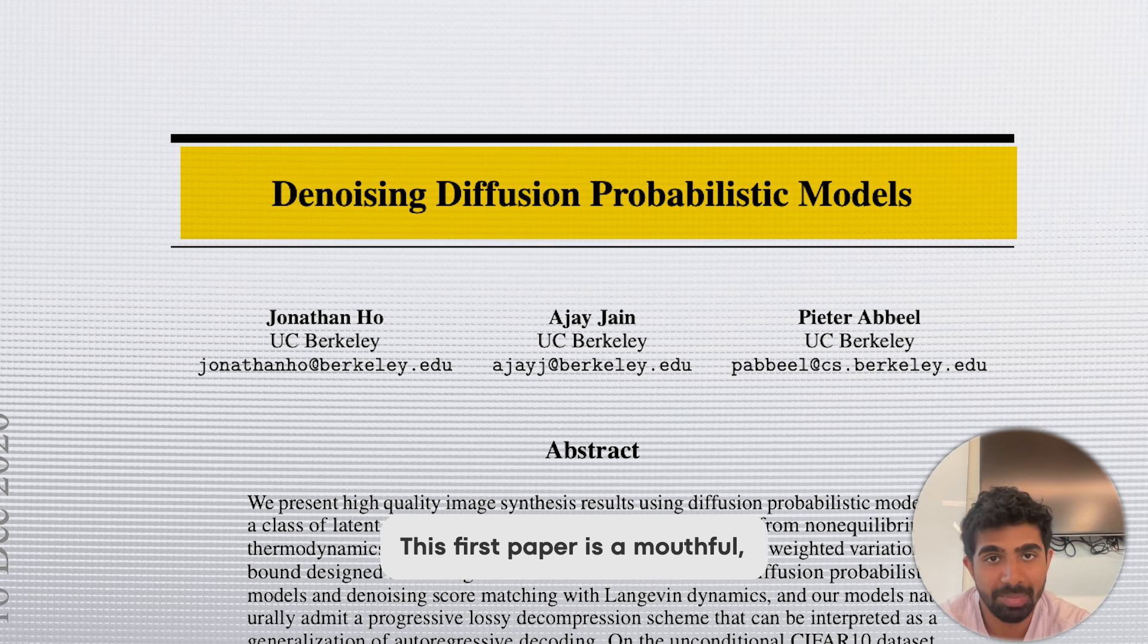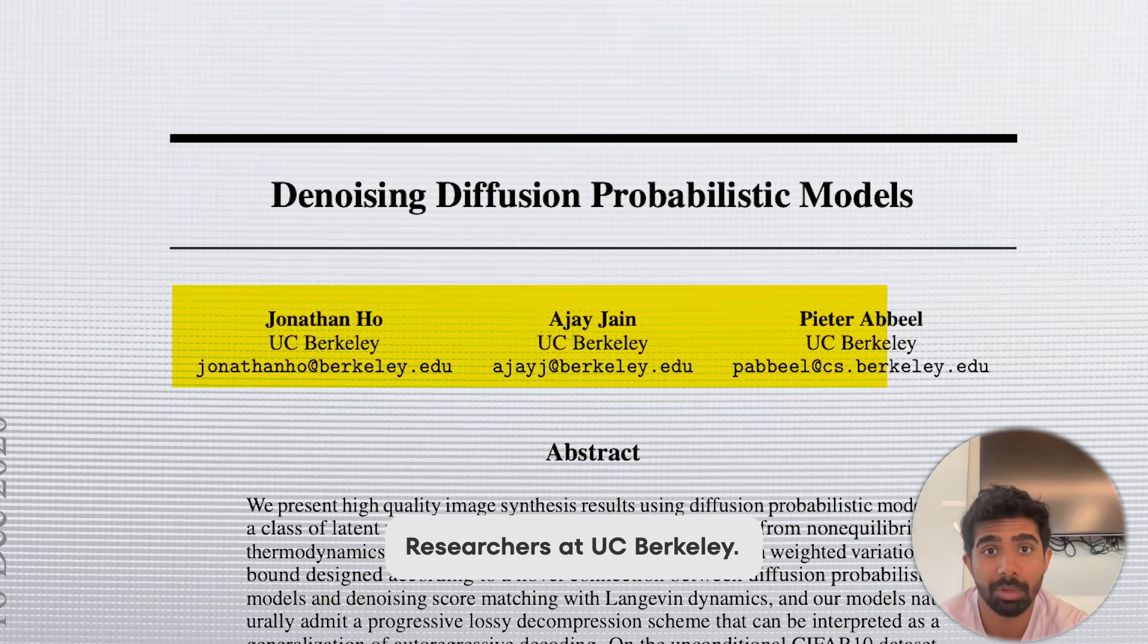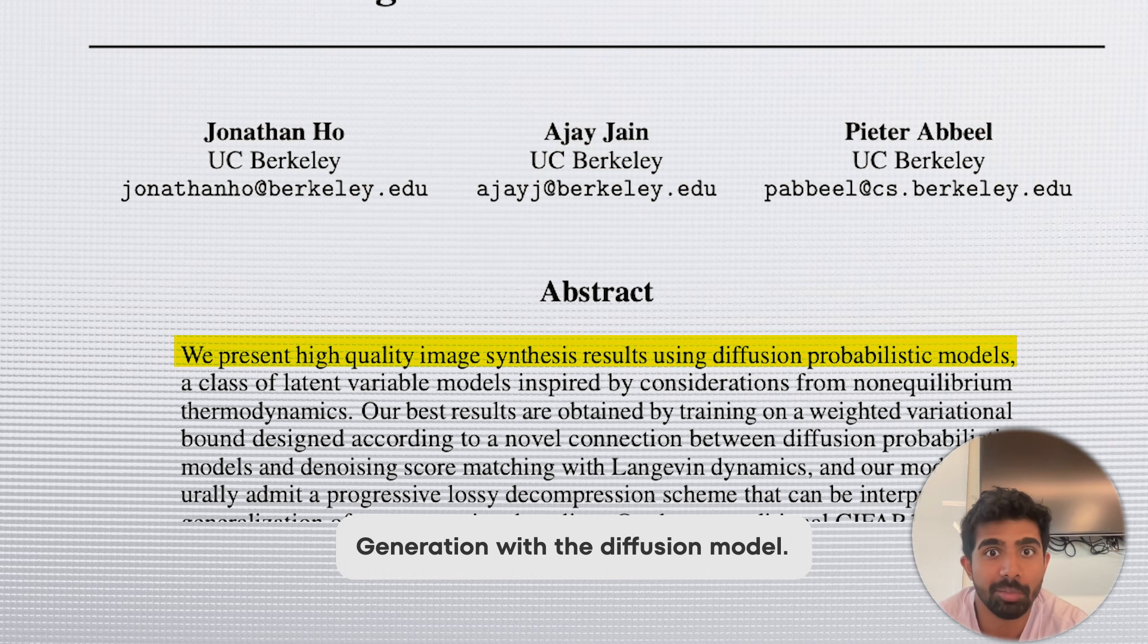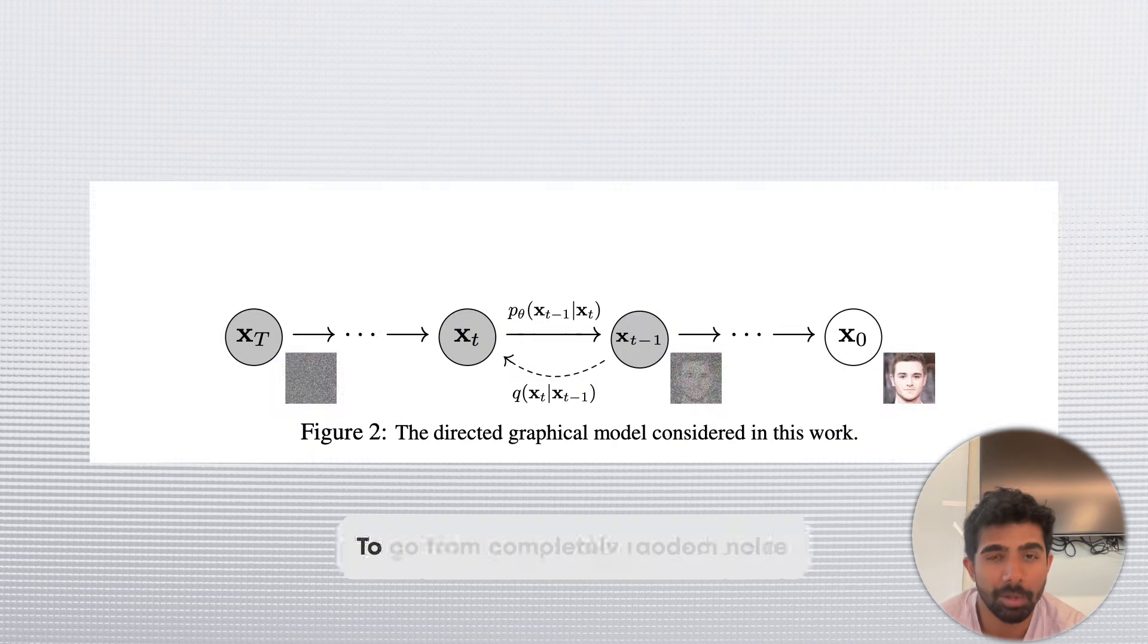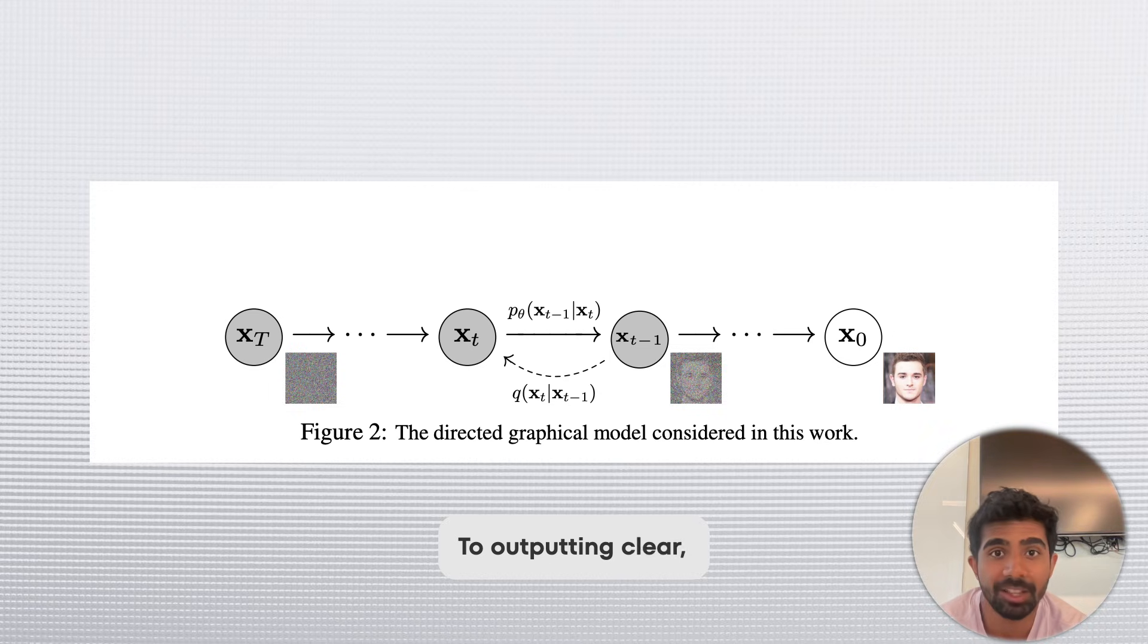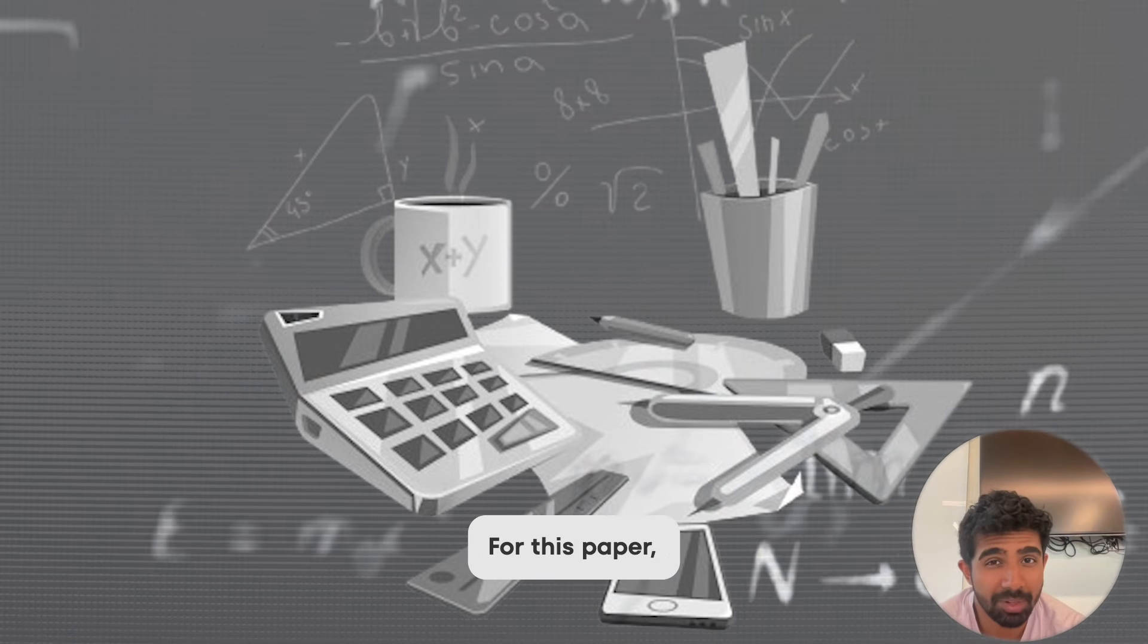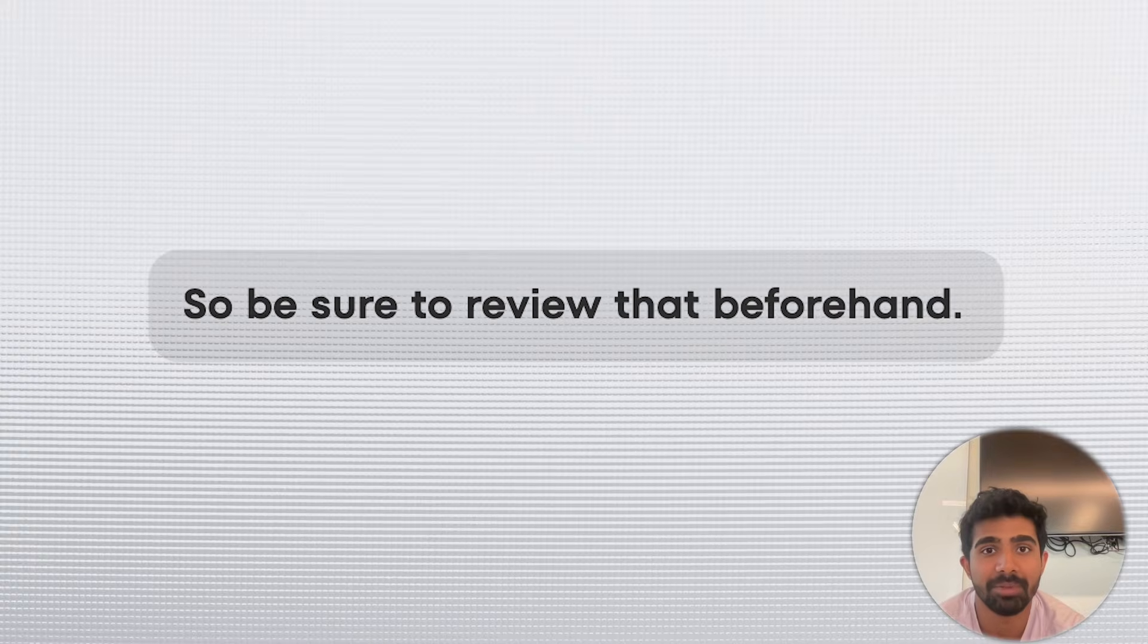Alright, the title of this first paper is a mouthful, so I'm not even going to bother saying it out loud. It's a 2020 paper from researchers at UC Berkeley. It revolutionized AI image generation with the diffusion model. The general idea, the high-level explanation, is that we train a model to go from completely random noise to outputting clear, visually discernible images. There is a ton of math you need to be familiar with for this paper, especially probability and statistics, so be sure to review that beforehand.